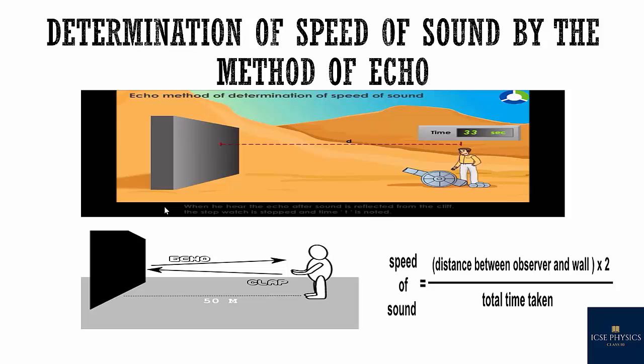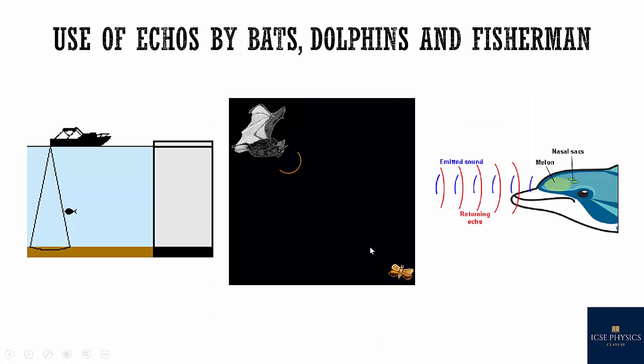So how can you determine the speed of sound by a method of echo? Speed is distance by time. If you know the distance, say the distance is 50 meters. So what will be the total distance for echo? 50 times 2, that's 100. Time is 0.3 seconds. So you can calculate the speed of sound.